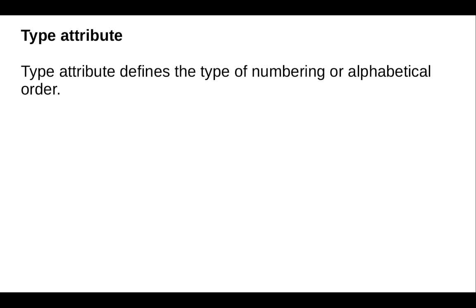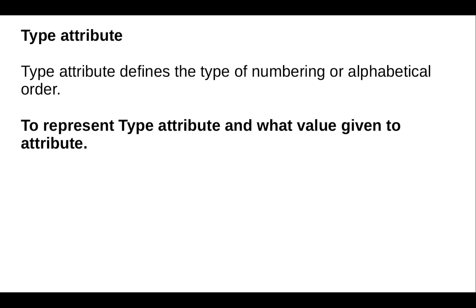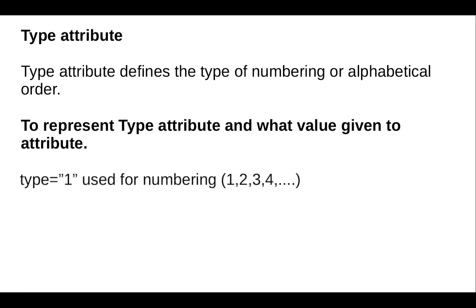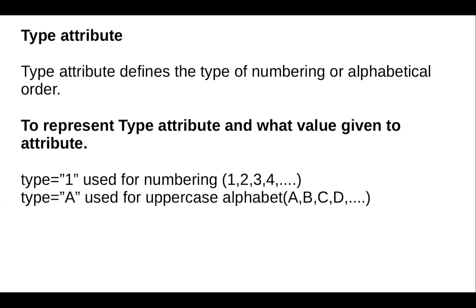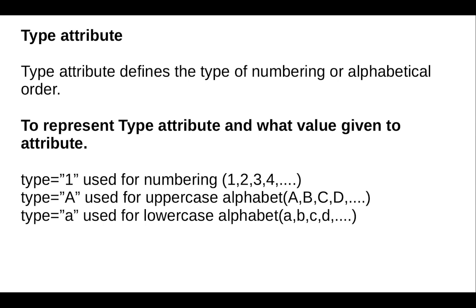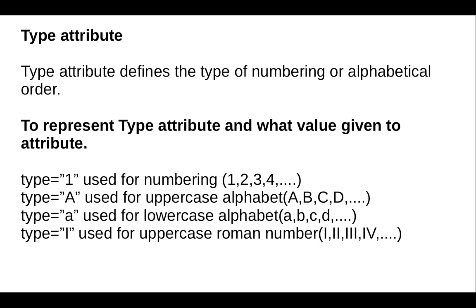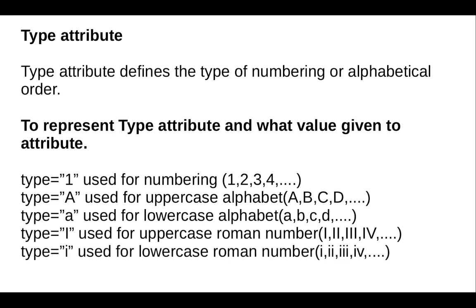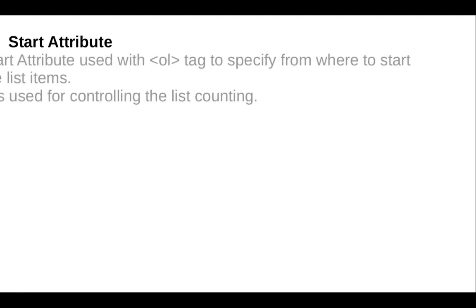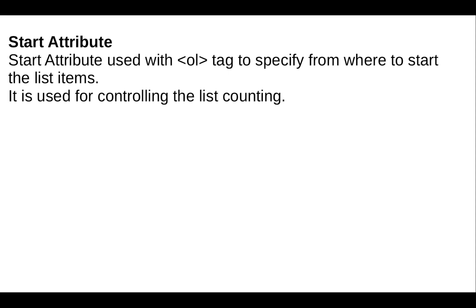We can use the type attribute in the ol tag. The type attribute defines the type of numbering or alphabetical order. Type '1' is used for numbering (1, 2, 3, 4...). Type 'A' is used for uppercase alphabets (A, B, C, D...). Type 'a' is used for lowercase alphabets, and 'I' is used for uppercase Roman numerals.